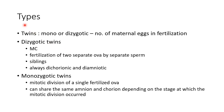Now let us see about the types of twins. Twins are of two types: they are monozygotic or dizygotic, and this depends on the number of maternal eggs involved in fertilization. Dizygotic twins are the most common type. They occur due to fertilization of two separate ova by two separate sperm, and are more or less similar to siblings. Dizygotic twins are always dichorionic and diamniotic.